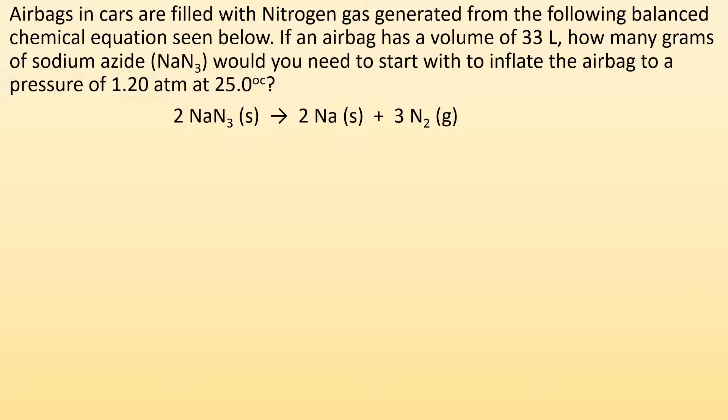So let's plan this out. They're giving me pressure, temperature, and volume. So I know from PV equals NRT, I can figure out how many moles of nitrogen gas do I need. So first step is going to be moles equals PV over RT. Now once I have moles of N2, then I'm going to have to use the balanced chemical equation, mole ratio, to get me moles of NaN3.